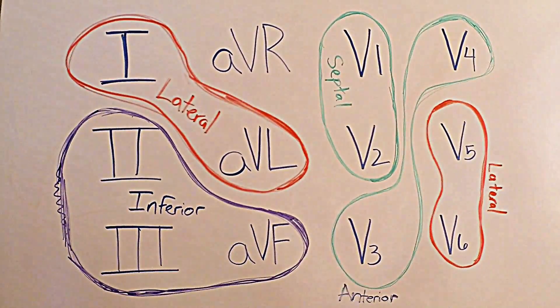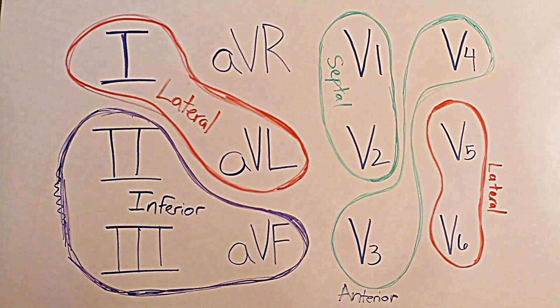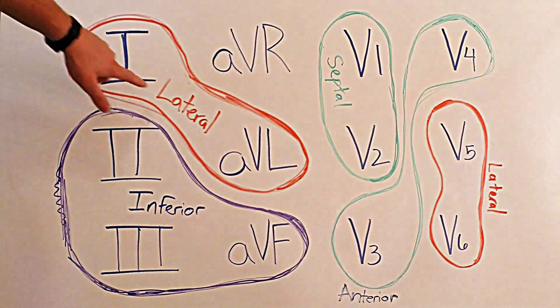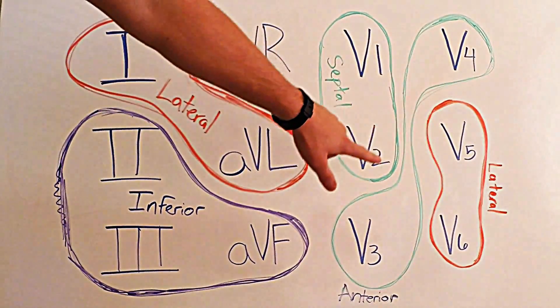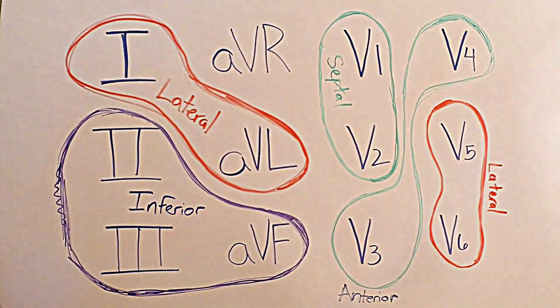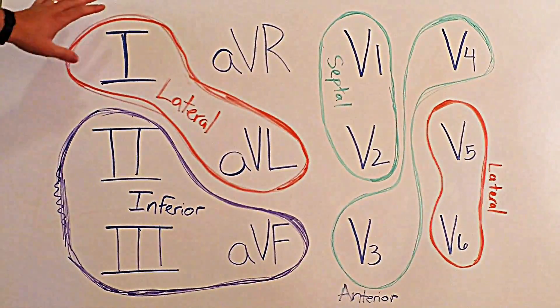And also lateral is red because this is also lateral, and that's in V5 and V6. So if you ever find ST elevation, you'll know where the MI is occurring because you've memorized it.